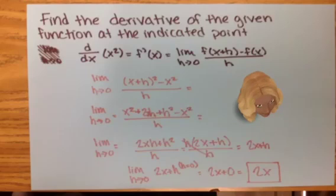Since you're finding the limit as h approaches 0, you will have 2x plus 0, which gives you 2x.